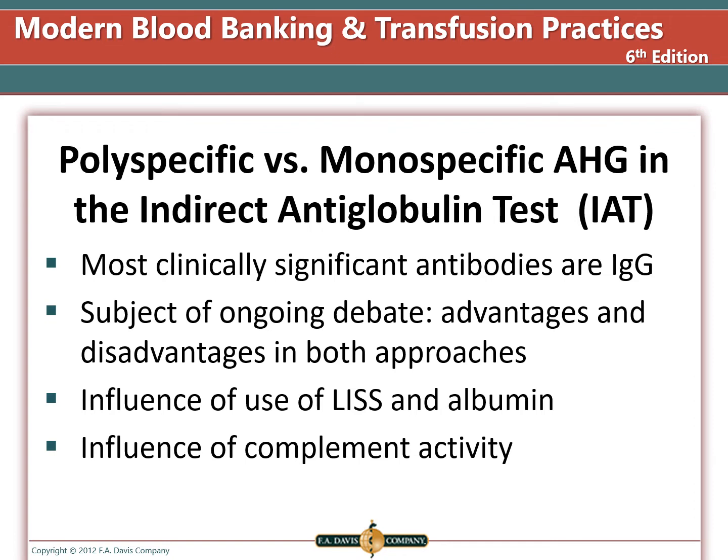Most clinically significant antibodies are IgG. One must balance the advantage of detecting clinically significant complement-only antibodies with the disadvantages resulting from using antiglobulin serum containing anticomplement activity. Sometimes you might detect things that are not clinically significant, and this can slow down the process of getting blood to a patient who needs it.